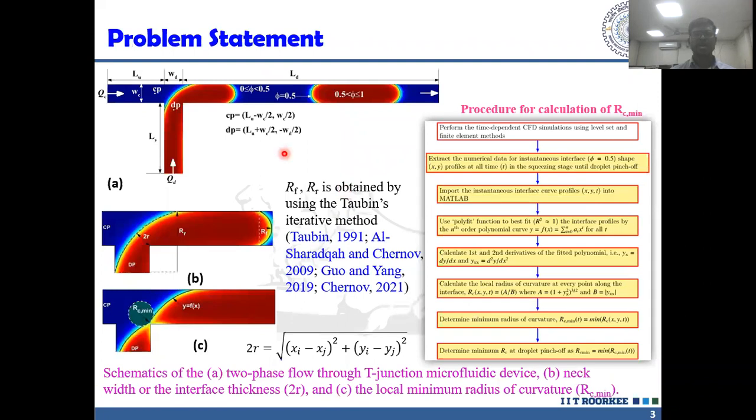Consider the two-dimensional laminar flow of two fluids through a T-junction rectangular microfluidic device. The T-junction is constructed by a vertical channel intersecting perpendicular to the horizontal channel. The interface evolution profile is described by three parameters. First, RF and RR, the front and right sides of the interface determined by using Tobin circle fitting method. The second one is 2R, interface neck width. It is essentially the distance between the junction point to the nearest point on the interface.